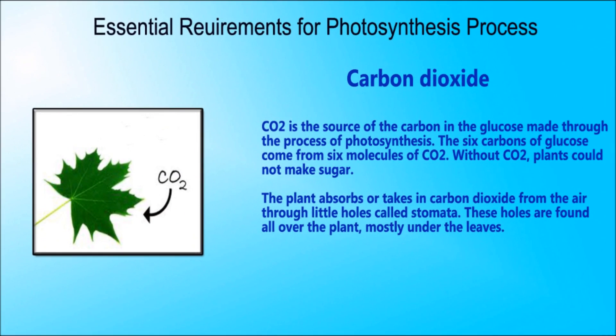Carbon dioxide is the source of the carbon in the glucose made through the process of photosynthesis. The six carbons of glucose come from six molecules of carbon dioxide. Without CO2, plants cannot make sugar. The plant absorbs carbon dioxide from the air through the little holes called stomata. These holes are found all over the plant, mostly under the leaves.